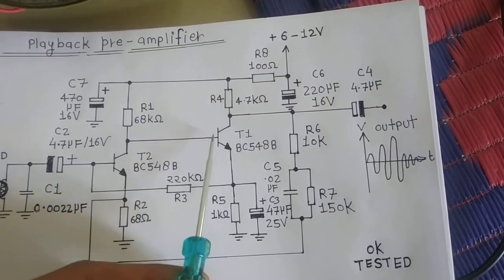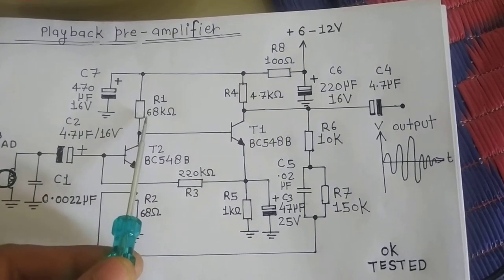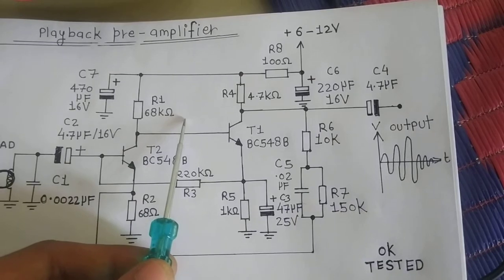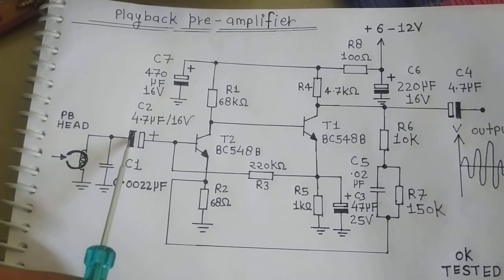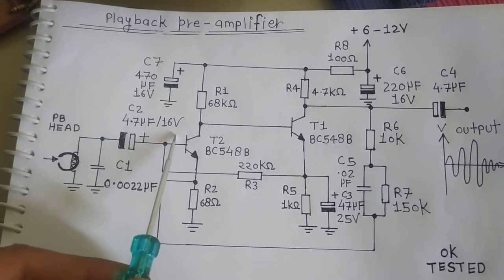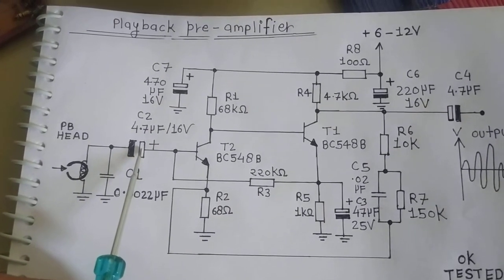The base of this transistor and collector of this transistor are biased with the same 68 kilohm resistor. Here I have used a 4.7 microfarad capacitor to remove or block the DC.